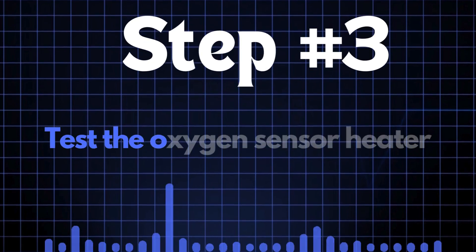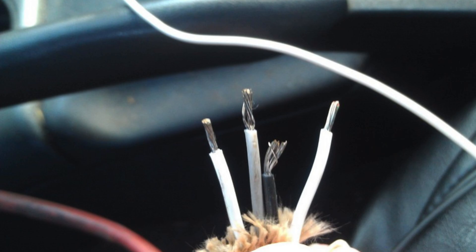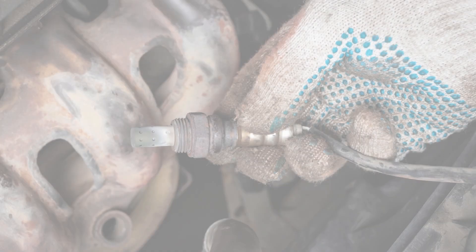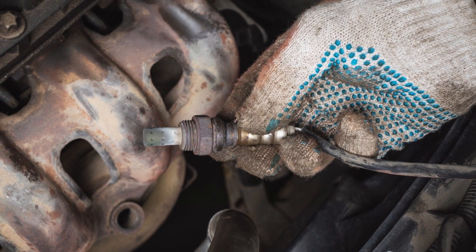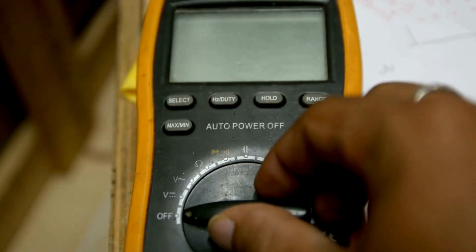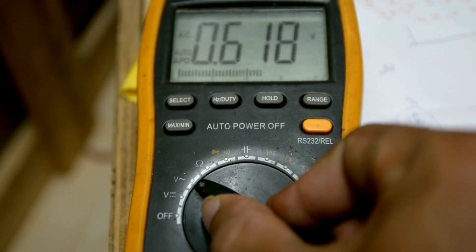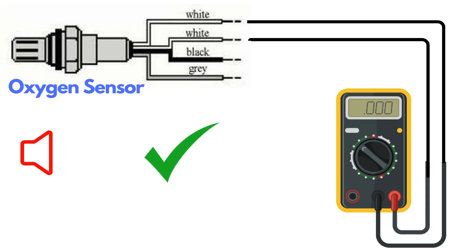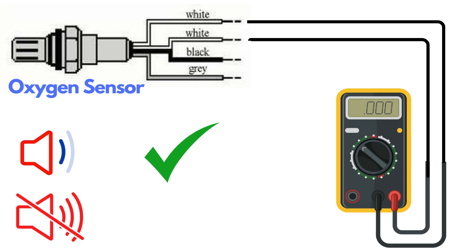Step 3: Test the oxygen sensor heater. Oxygen sensors typically have four wires. Two of these wires, usually of the same color, are dedicated to the heater circuit within the sensor. Over time, the heater circuit can burn out and stop functioning properly. To test it, set a multimeter to check for continuity, then place the probes on the two heater wires. If the circuit has continuity, the multimeter will beep, indicating the heater is functioning. If there's no beep, the heater circuit is broken and you'll need to replace the oxygen sensor.